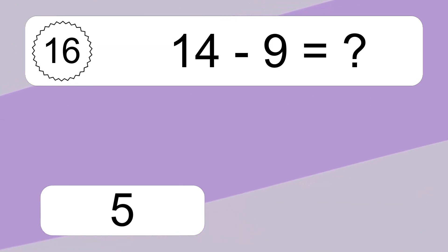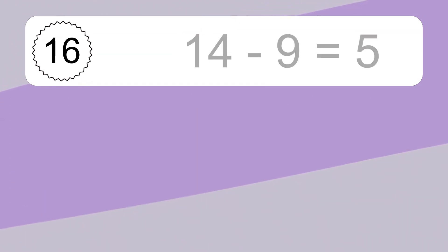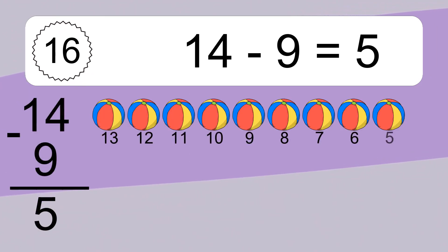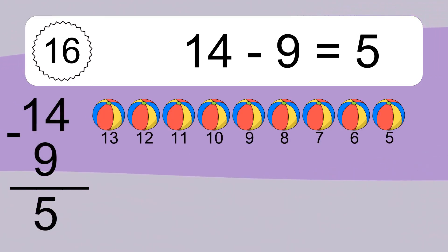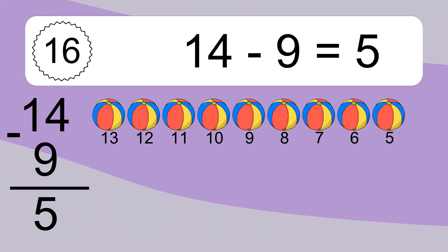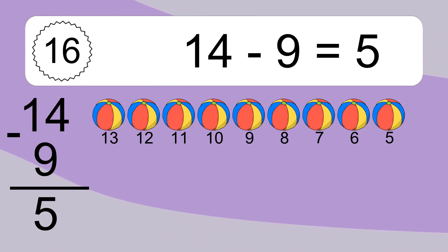14 minus 9 equals 5. Let's count it: 13, 12, 11, 10, 9, 8, 7, 6, 5.